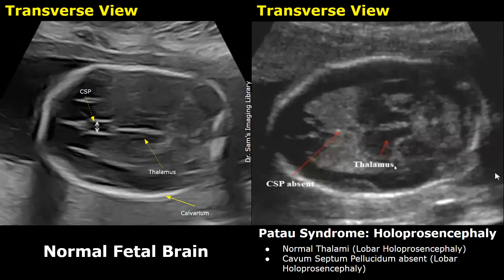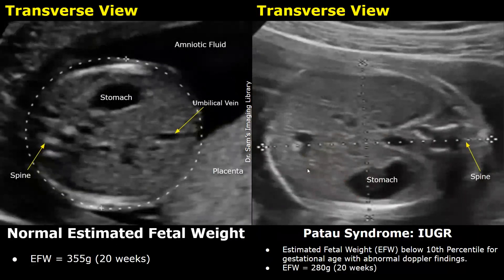Holoprosencephaly is strongly associated with Patau syndrome. A fetus with Patau syndrome usually has intrauterine growth restriction as well. The fetal biometric parameters will be persistently short for gestational age with abnormal Doppler findings. The estimated fetal weight will be below the 10th percentile for gestational age with abnormal Doppler findings.